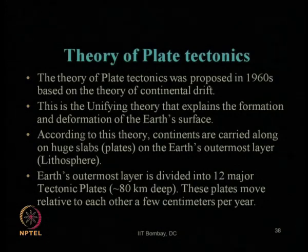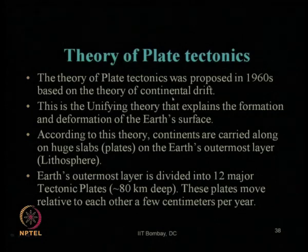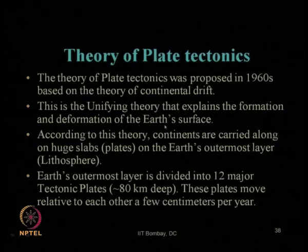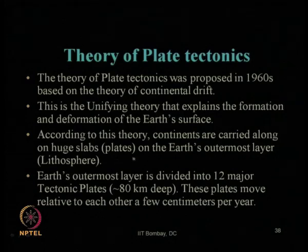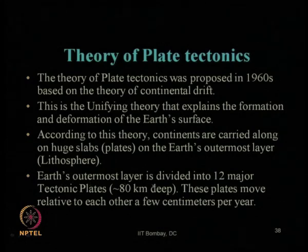The theory of plate tectonics was proposed in the 1960s based on Alfred Wegener's theory of continental drift — that continental drift must have occurred with time, creating those plates. This is the unifying theory that explains the formation and deformation of the earth's surface. According to this theory, continents are carried along on huge slabs called plates on the earth's outermost layer or lithosphere — the crustal plates or continental plates.